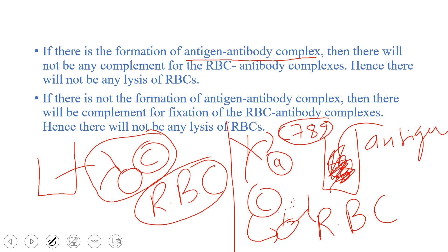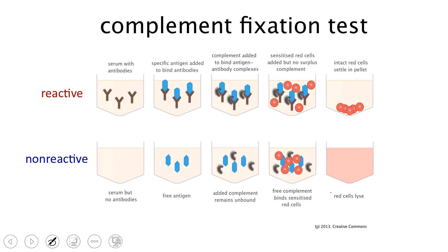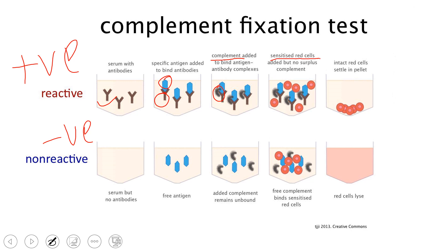The complement fixation test can be demonstrated by a figure. The reactive (positive) case shows: serum contains antibody, antigen is added forming an antigen-antibody complex, complement proteins are added and bind to this complex, then sensitized RBCs are added but all complement proteins are already utilized by the antigen-antibody complex. No free complement is available to bind the sensitized RBCs.